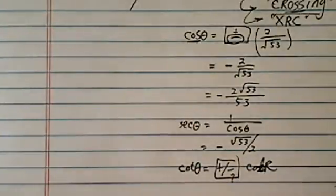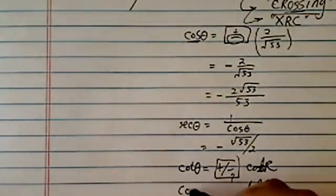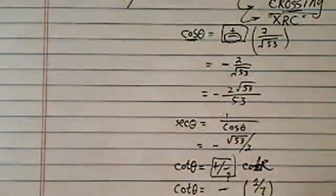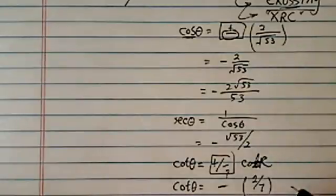Cotangent of r, it's pretty easy to find using our reference triangle. The reference triangle says cotangent is 2 over 7, and it's in the second quadrant. Cotangent is negative, so it's negative 2 over 7. I'm running out of space.